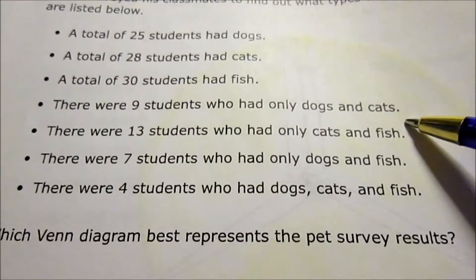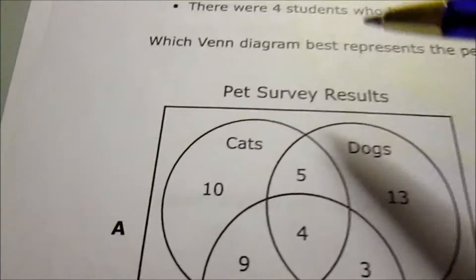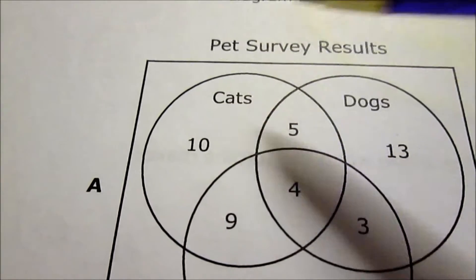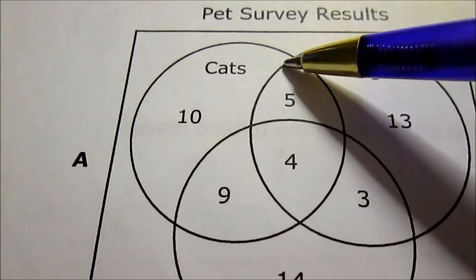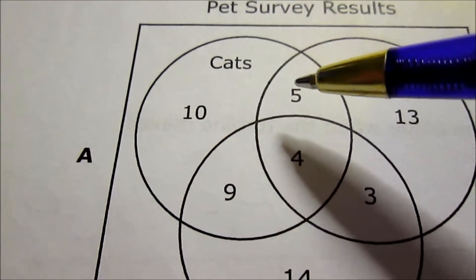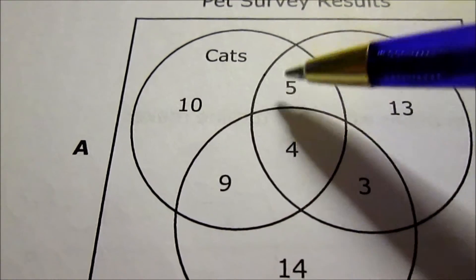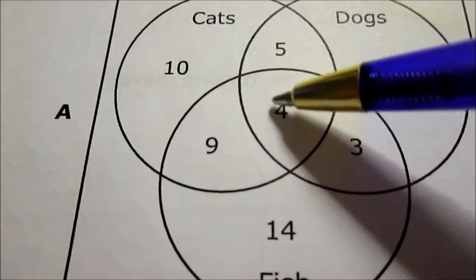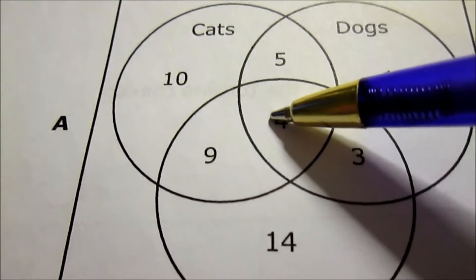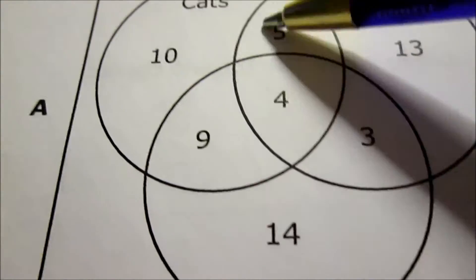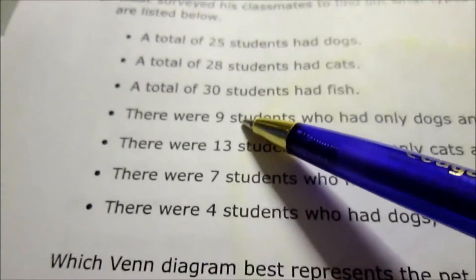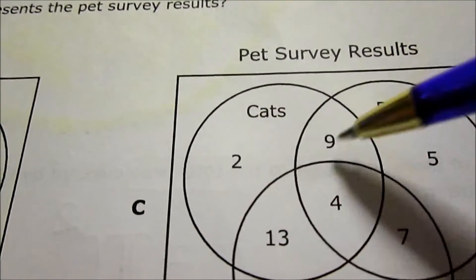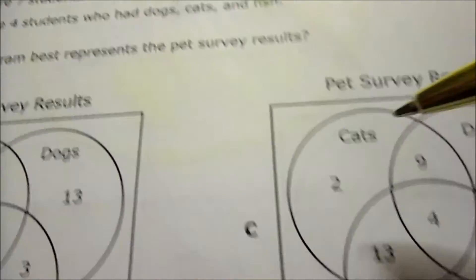Next one: 9 students who had only dogs and cats. So only dogs and cats. Here's the cat circle, here's the dog circle. Where they cross is here. There are two sections that have dogs and cats, this one and this one. 5 have dogs and cats, and 4 have dogs and cats, but since they're in this fish circle, that means they also have fish. This one means 5 only dogs and cats, which is not 9. So let's look at C then. The dogs and cats intersection is here. 9 have only dogs and cats, which fits this statement. That means C is the best answer.